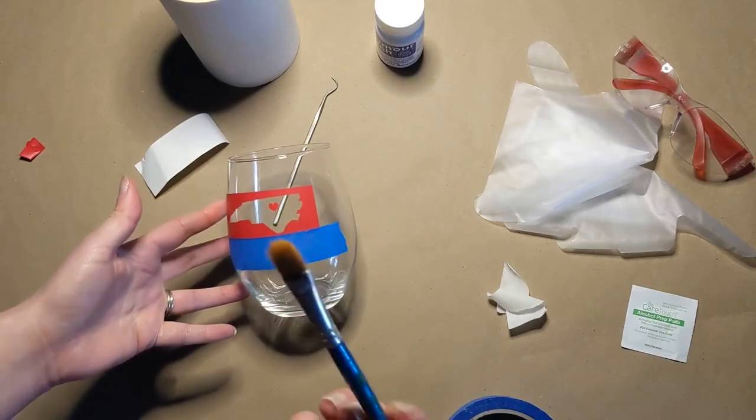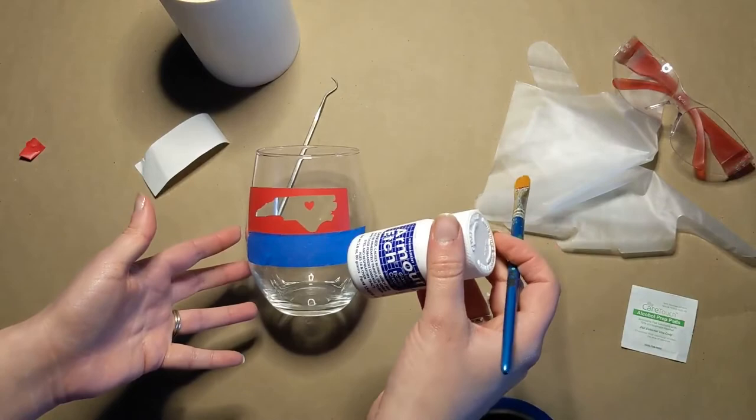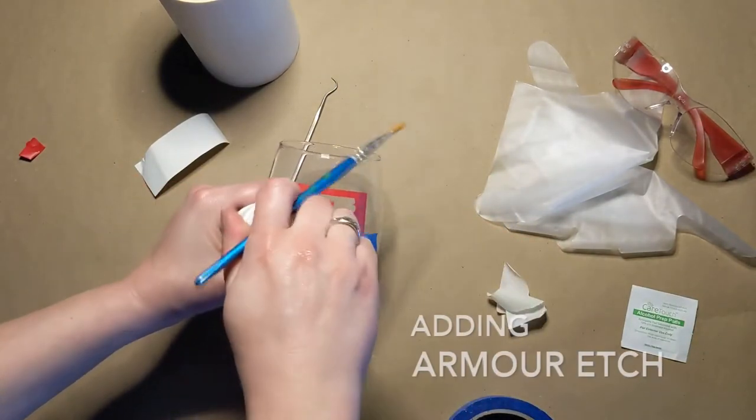Just in case it happens to drip down, you know, we don't want it to be etching the glass in places that we don't want. The other thing I forgot to mention is a paintbrush. You will need this for actually spreading the armor etch onto the glass. So yeah, which we are going to do right now.